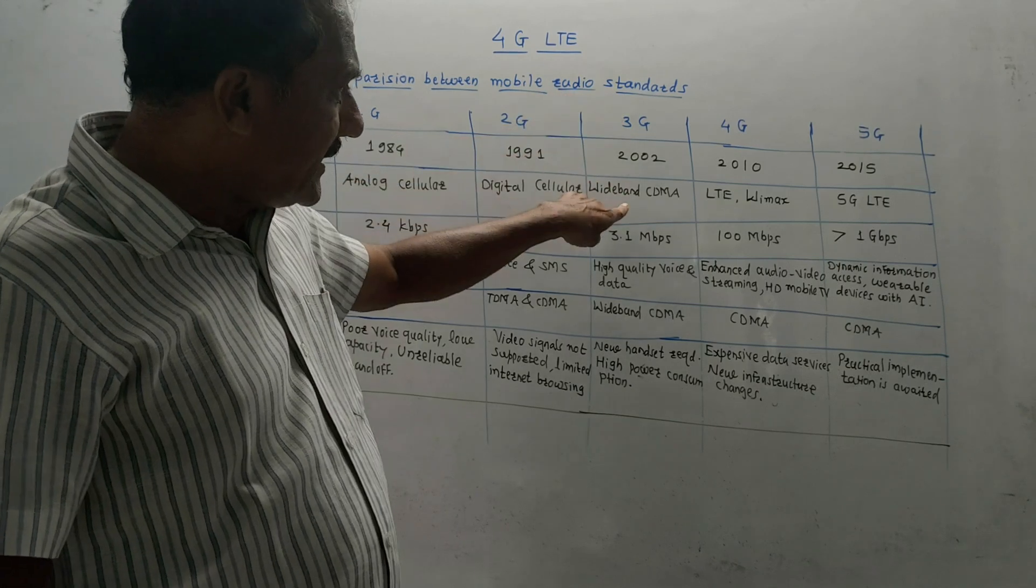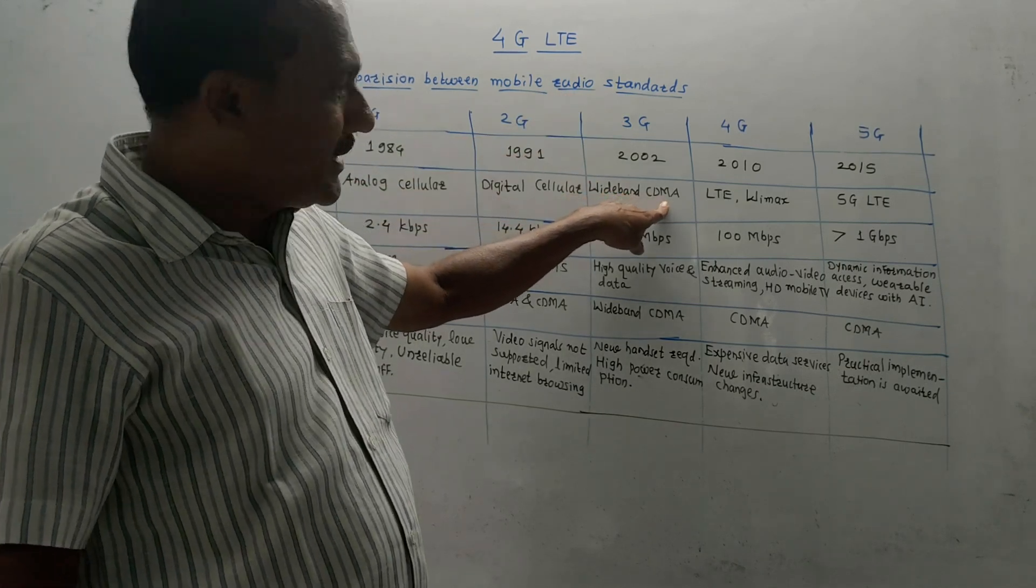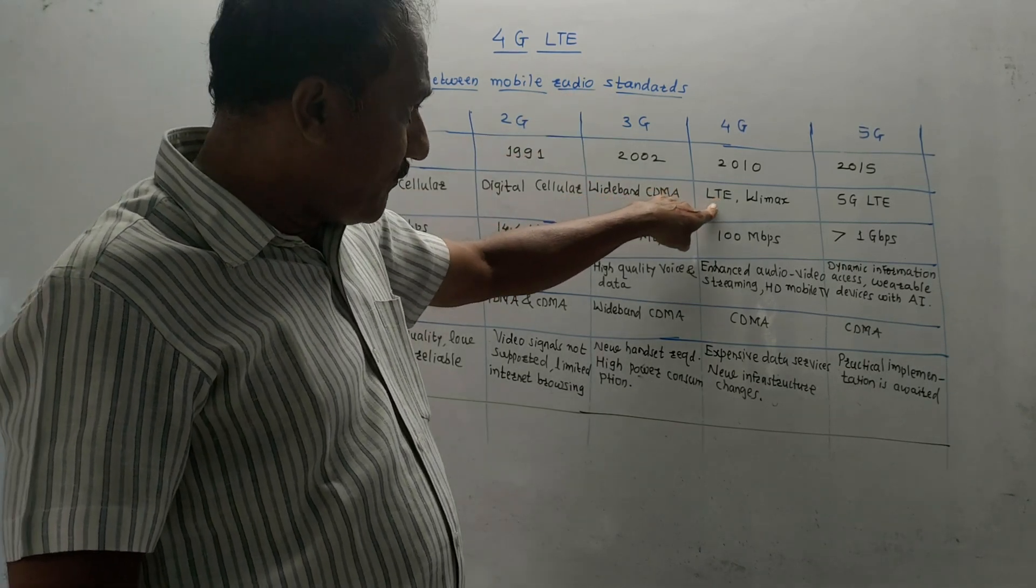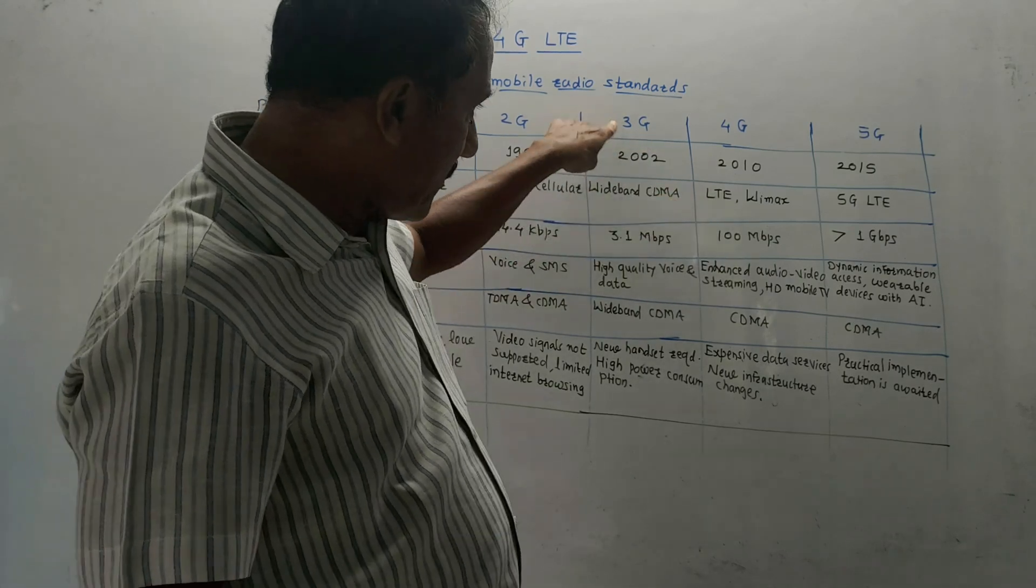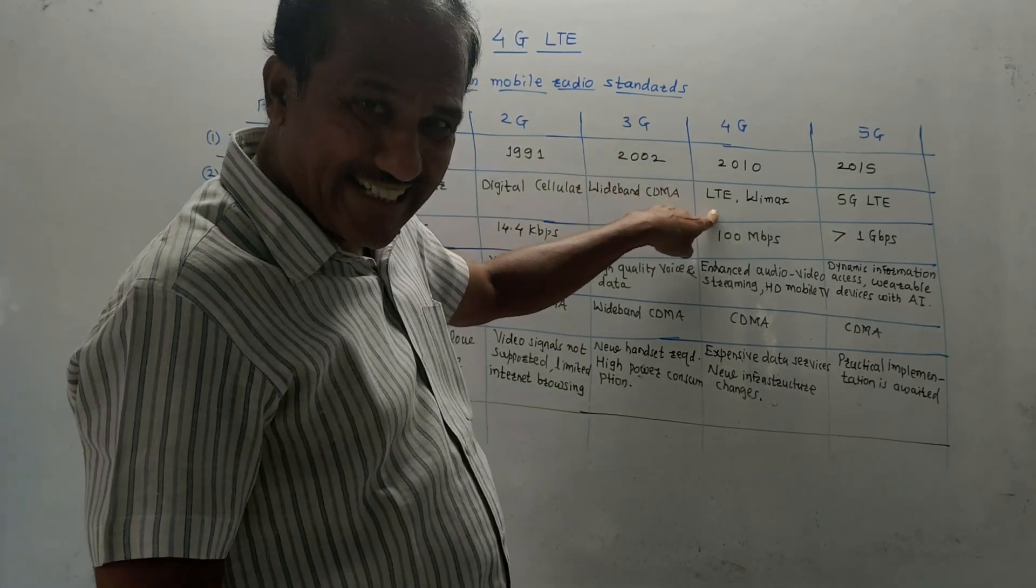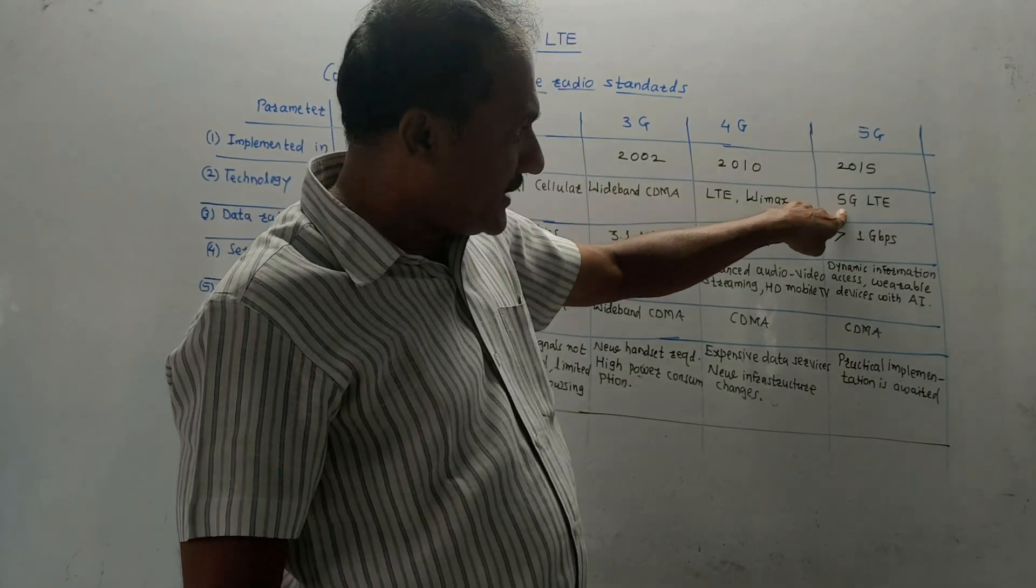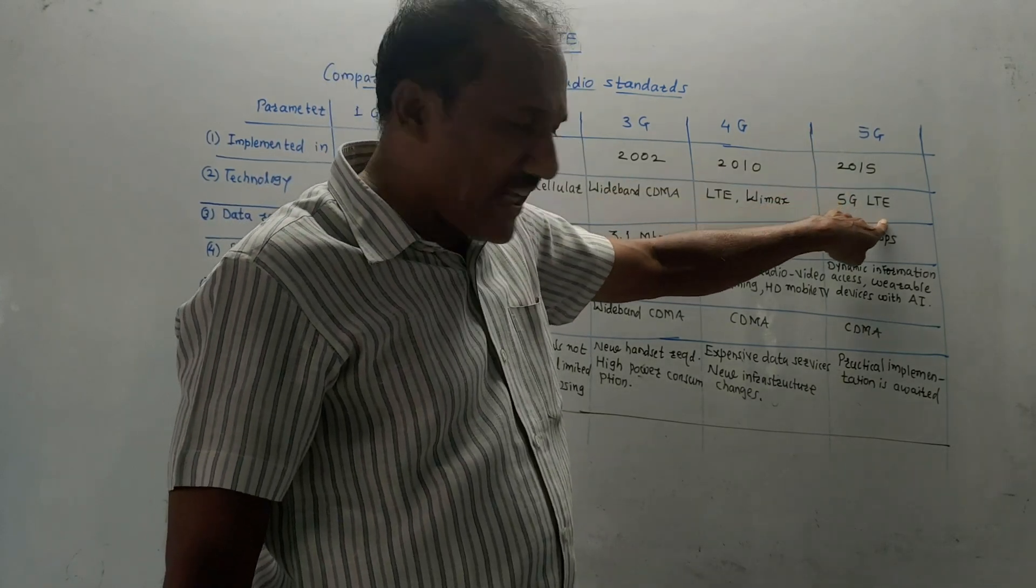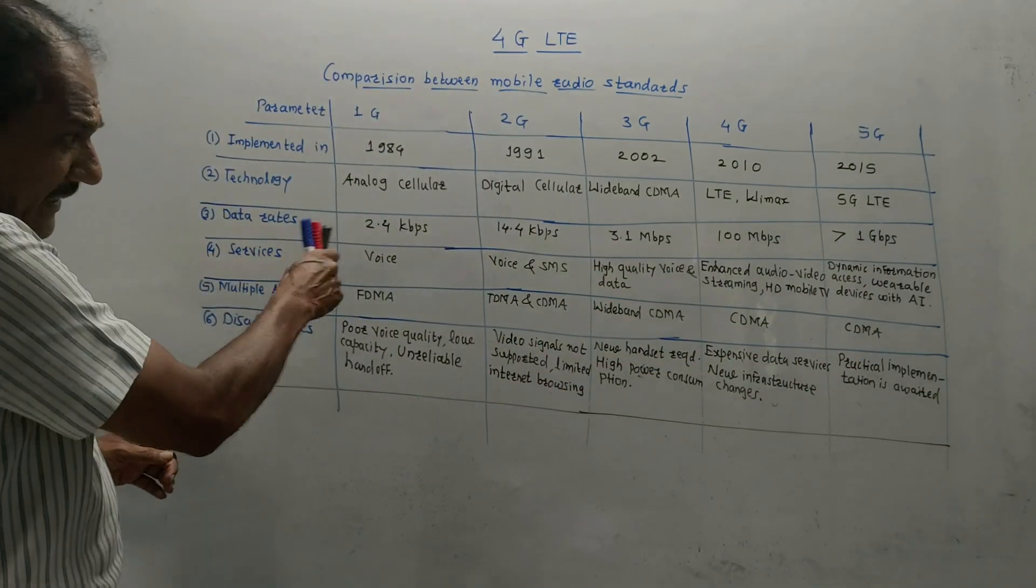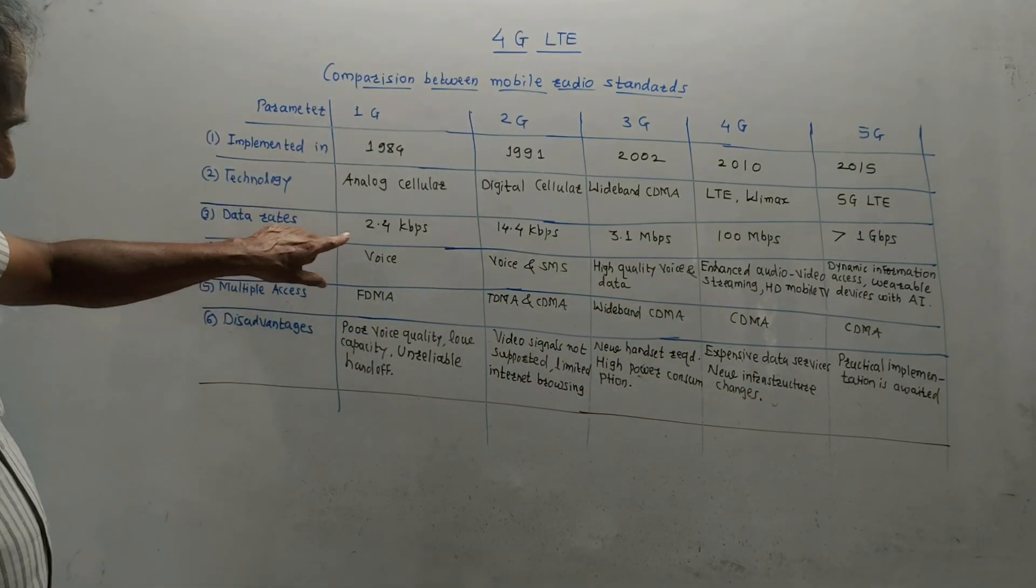Third generation is wideband CDMA, code division multiple access. Fourth generation: LTE long-term evolution and WiMAX. Fifth generation: 5G LTE.